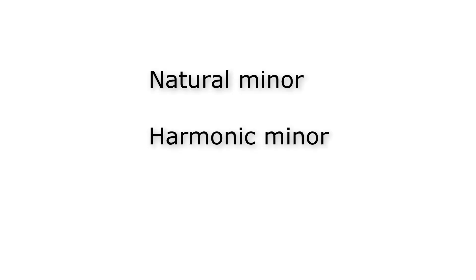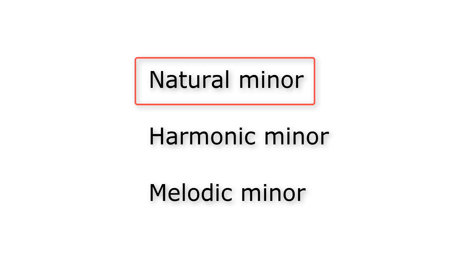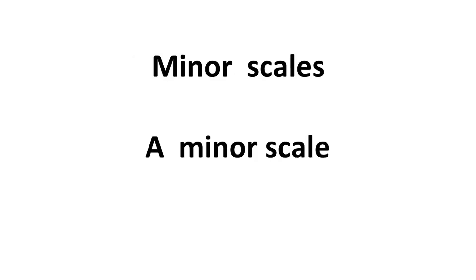Let's now have a look at the minor scales. To be honest, there is not only one minor scale — there are three different minor scales: natural minor, harmonic minor and melodic minor. We will however look only at the natural minor scale. The natural minor scale is derived from the major scale. You can see that easily when you realize that the A minor scale consists of exactly the same notes as the C major scale — it only starts on A instead of on C.